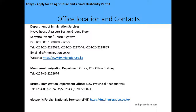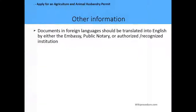The office location and contact information of the Department of Immigration Service: the headquarters is in Nyayo House, Nairobi, Kenya. Their website is www.immigration.go.ke. In Mombasa, you can visit them at the PC's Office Building. In Kisumu, you can visit them at the New Provincial Headquarters. Their online platform is fns.immigration.go.ke. Note that documents in a foreign language should be translated into English either by the embassy, a public notary, or an authorized institution.